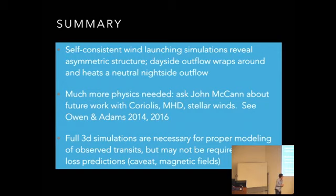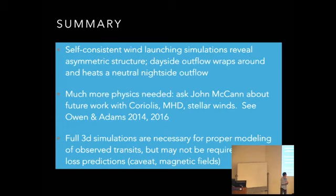The short answer is that magnetic fields matter a lot, depending on the field strength and configuration. James and Fred have looked at this a lot in two dimensions. You can get magnetic confinement of the flow and actually suppress wind launching from the polar regions, which can dramatically change the mass loss rates. It can also change whether your flow is in the energy-limited regime or what James calls the photon-limited regime. Those are probably really important for understanding the variety of observations we're likely to get in the coming years.